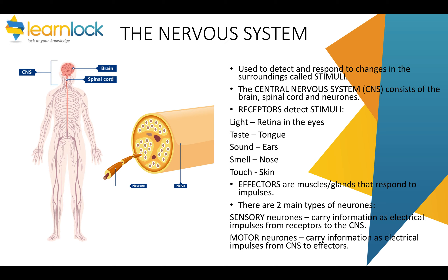Going back to neurons, there are two main types in your body. Sensory neurons sense the information and carry it from the receptors to the central nervous system. Then motor neurons — think motor and movement — carry the information from the central nervous system to the effectors, so to the muscles and the glands. Information is passed through the nervous system through electrical impulses.